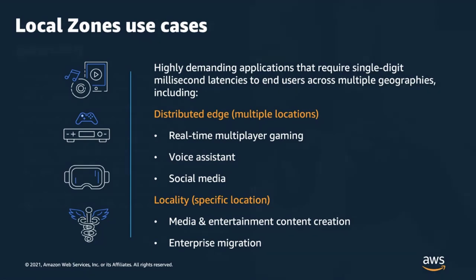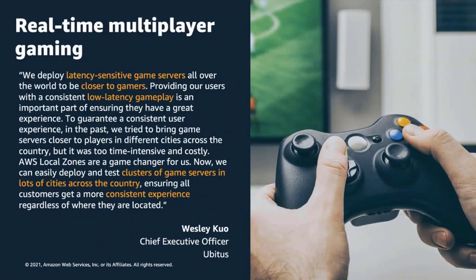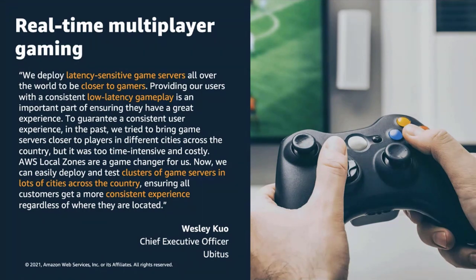The first important Distributed Edge use case is real-time multiplayer gaming, where gaming companies like Supercell and Ubitus deploy game servers worldwide to be closer to gamers. A latency of 20 to 30 milliseconds or less is considered ideal for a good gameplay experience. Until now, these customers were using on-premise installations in various metropolitan areas to supplement AWS presence. Now these customers can deploy latency-sensitive game servers in Local Zones to run real-time interactive multiplayer gaming sessions, enabling great experiences for end users across the world.